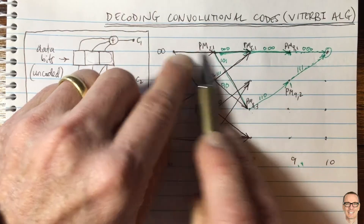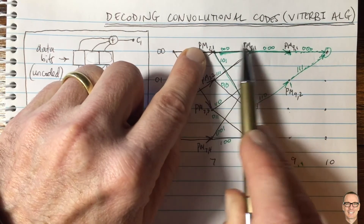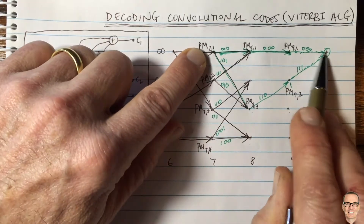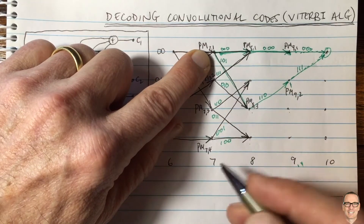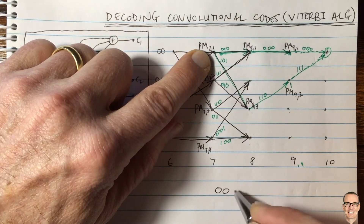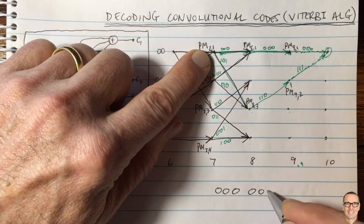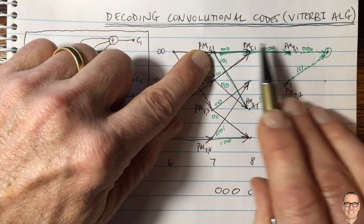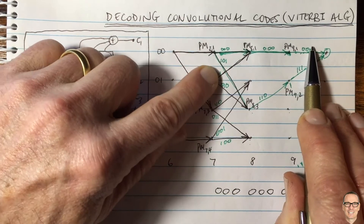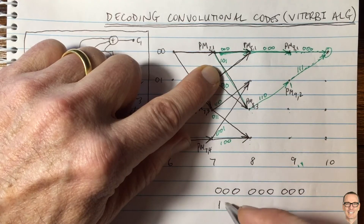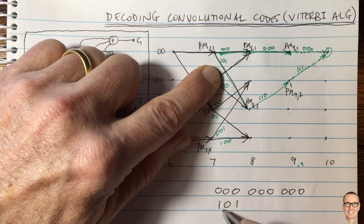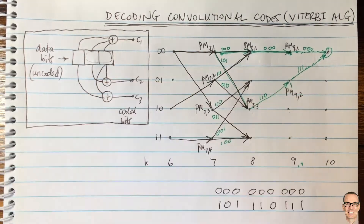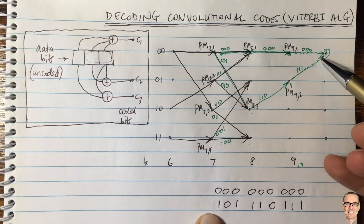So making a decision here is really a comparison between two sequences of coded bits — for example, 000-000-000 versus 101-101-111 — over the three previous time slots. It's not simply a comparison at one time slot; you're comparing sequences of nine bits across those three time slots.